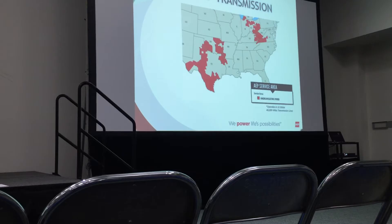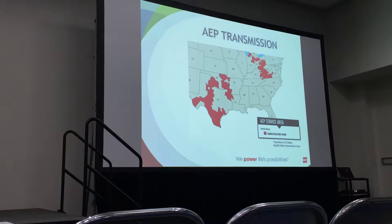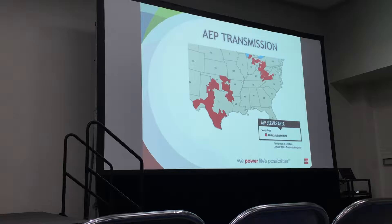I'm Mike Bones, this is Ben Brown. We are 66% of AP Transmissions' GIS department. This is the area we cover — we work in 13 states and we have 40,000 miles of transmission lines, so that's quite a bit to cover.